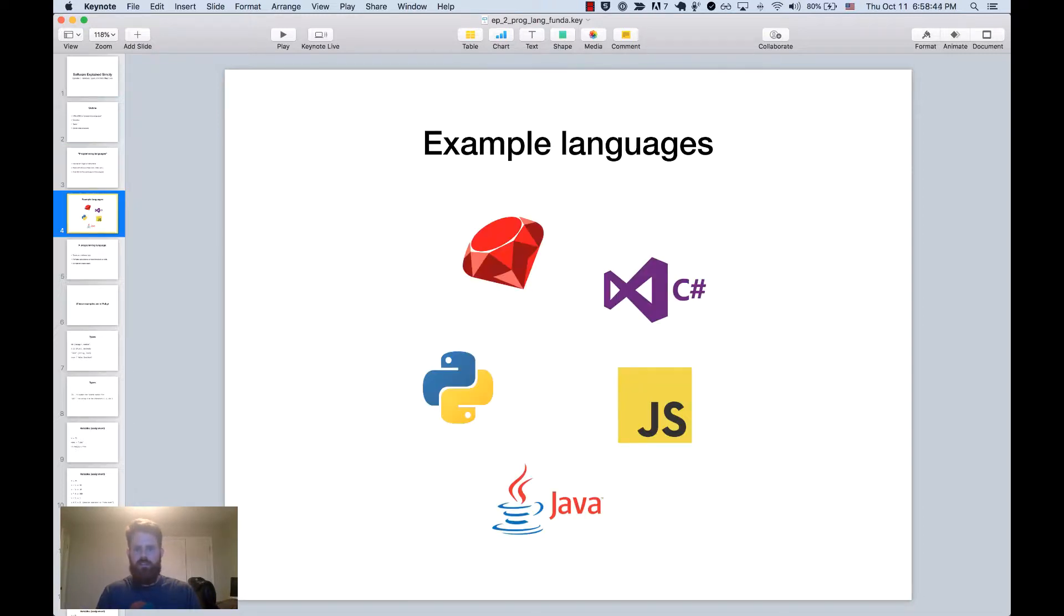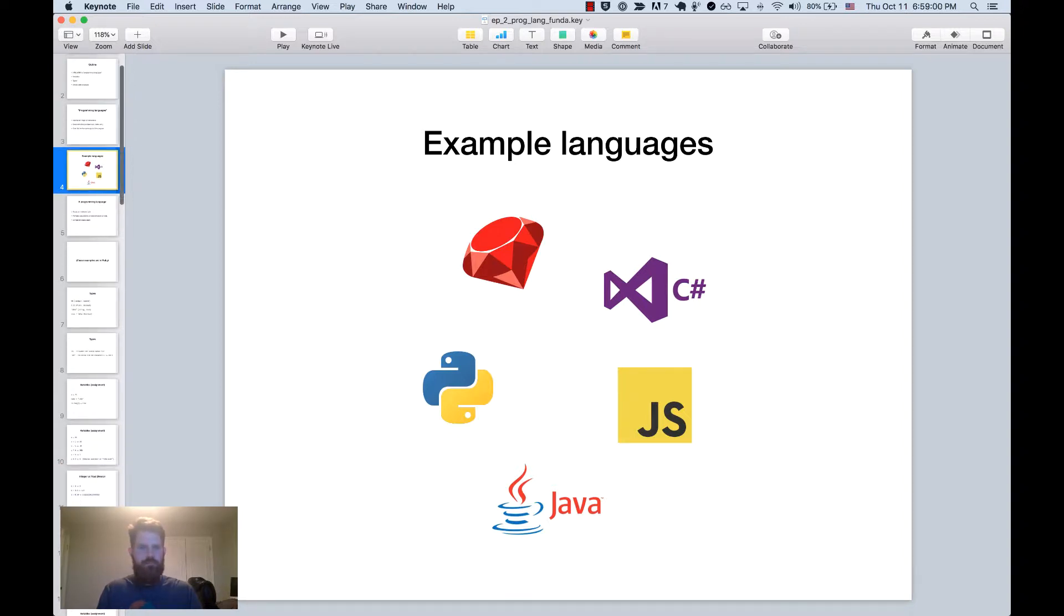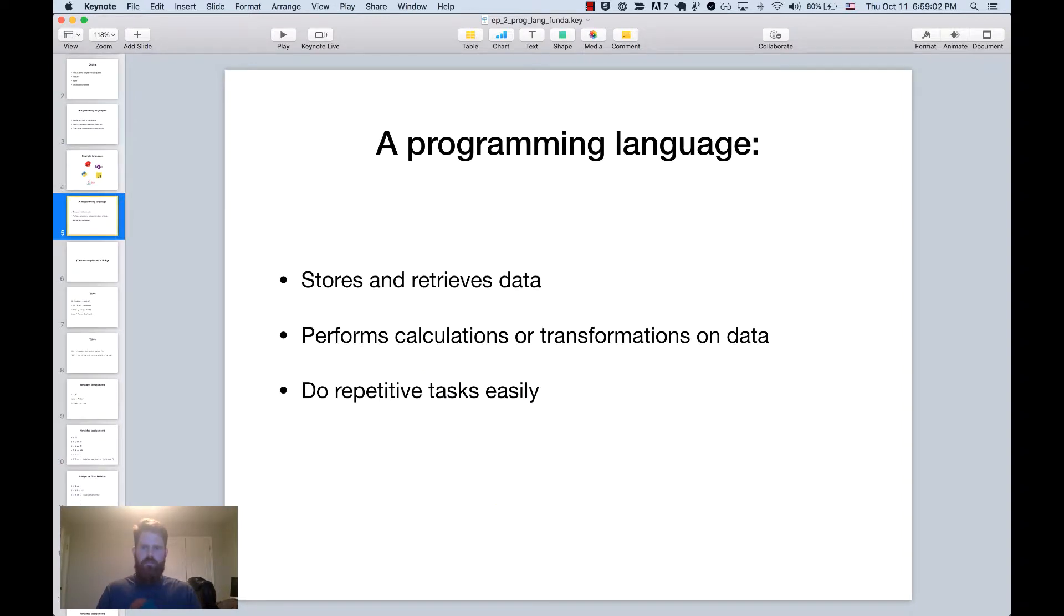Some examples for these languages would be something like Ruby, C-sharp, JavaScript, Java, or Python. This is not an exhaustive list by any means, but just to give you kind of an idea. If you didn't know, Java and JavaScript are totally different things, so just good to know. So when I say programming language, I'm talking about something that primarily deals with storing and retrieving data, something that can perform calculations or transformations of the data, and something that allows us to do repetitive tasks easily.